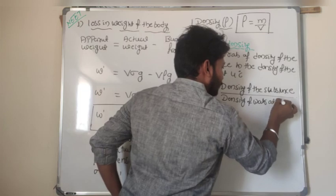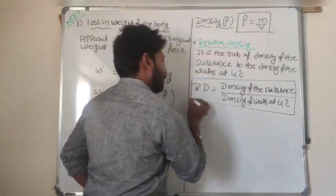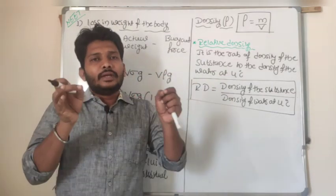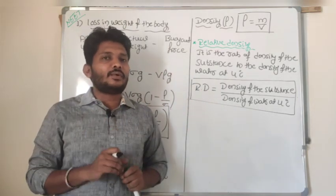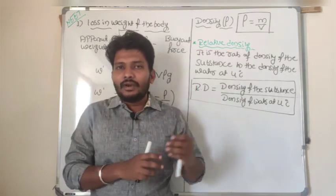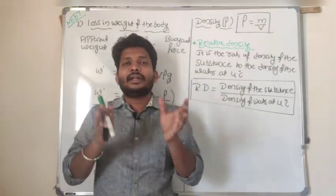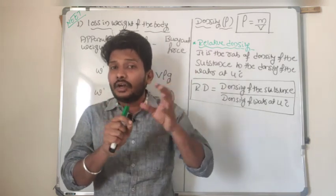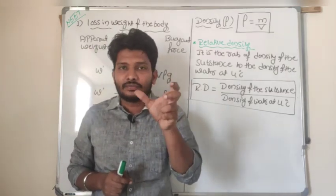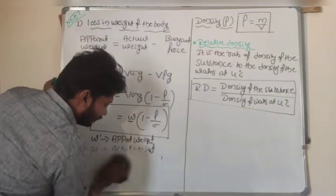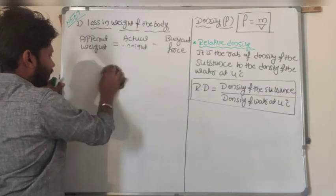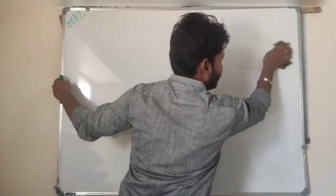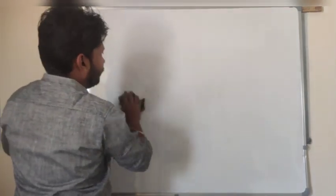The required formula for relative density is: Relative Density = density of substance / density of water at 4°C. Now, if we take two different liquids with masses m1 and m2 and densities rho1 and rho2, and mix them, we need to find the effective density of the mixture.